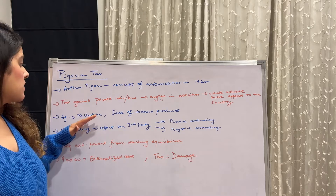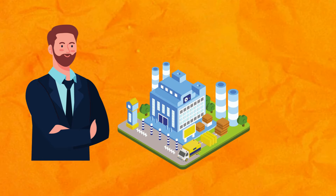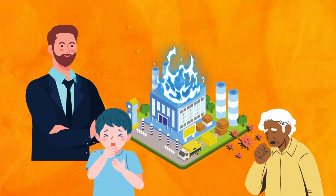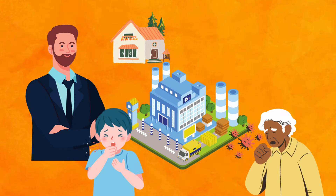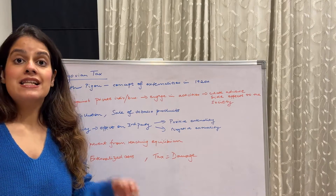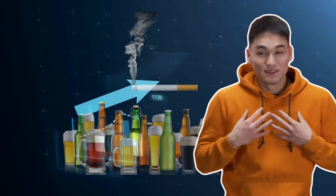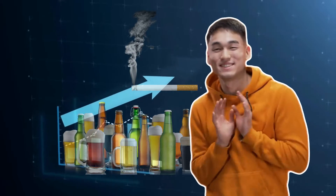For example, the most famous example is pollution. A business firm has a factory and that factory is creating pollution, which is causing harm to people residing near it. Secondly, the sale of tobacco products — we know tobacco is not good for society, so a Pigovian tax is levied on tobacco products so that it becomes expensive and people are discouraged from consuming it.